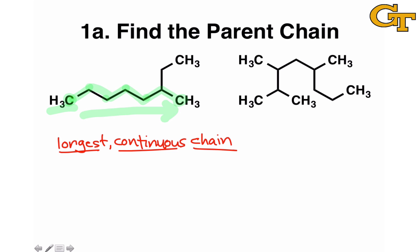Instead of going to the last methyl group when we had a choice at that carbon, imagine going upward. Highlighted in blue, we see a slightly longer chain — one, two, three, four, five, six, seven, eight carbons — so the blue chain is the parent chain. The reason we look for the longest continuous chain is simplification: by identifying the longest chain and treating the rest as branches, we pack as many carbons as possible into a straight-chain alkane name — methane, ethane, propane, etc. — and simplify the overall name.